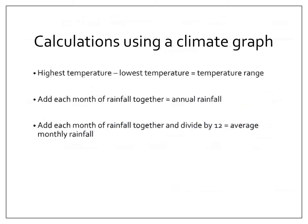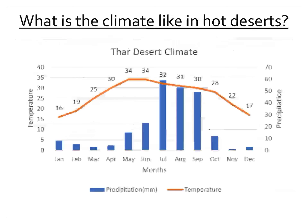Here are some useful calculations you can use when reading a climate graph. First, you could work out the temperature range: take the highest temperature and subtract the lowest temperature to get the range. Looking at the graph, the highest temperature is 34 and the lowest is 16, so 34 minus 16 is 18 degrees — that's our temperature range.